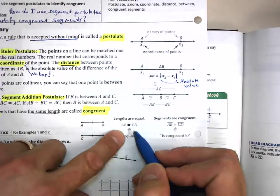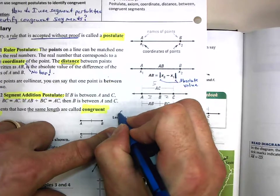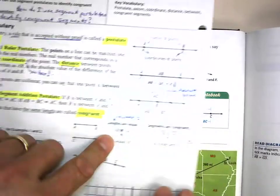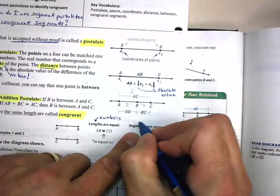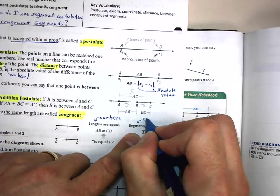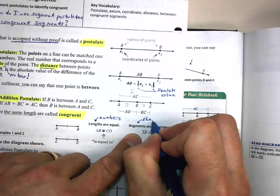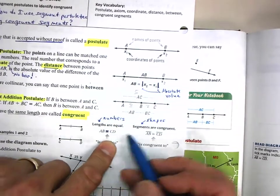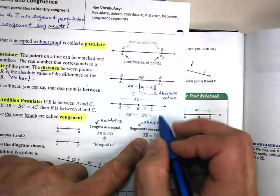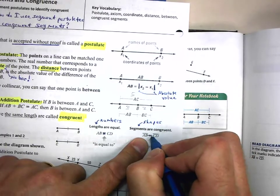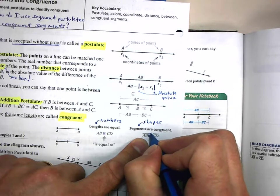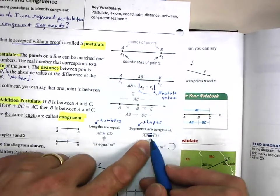Notice here—let's put lengths are equal. This is really important. Notice when it says AB, the length of segment AB equals the length of segment CD. So lengths are numbers—write the word numbers. And then segments are congruent because segments are shapes.